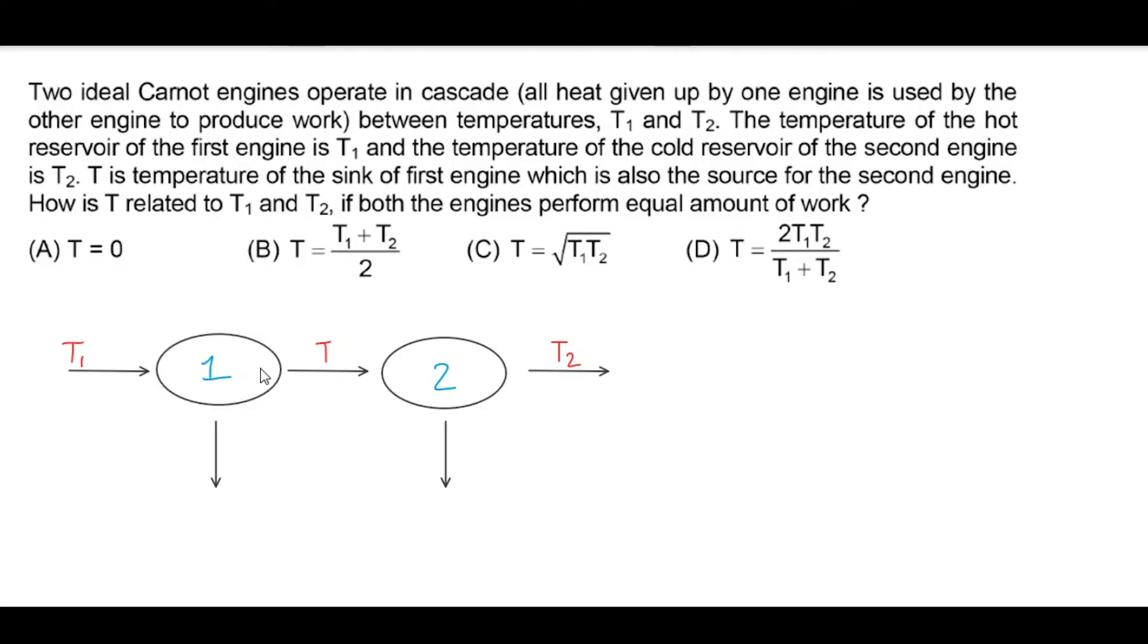How is T related to T1 and T2 if both engines perform equal amount of work? Let's say Q1 heat is supplied in the first engine, and Q heat is supplied to the sink. So what will be the work done? Q1 minus Q.